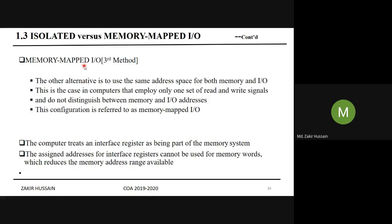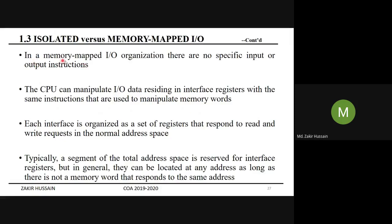In memory-mapped I/O, the computer treats an interface register as part of the memory system. The assigned addresses for interface registers cannot be used for memory words, which reduces the available memory address range. In a memory-mapped I/O organization, there are no specific input or output instructions. In the earlier case we had separate instructions that would generate I/O read, I/O write, memory read, or memory write signals.